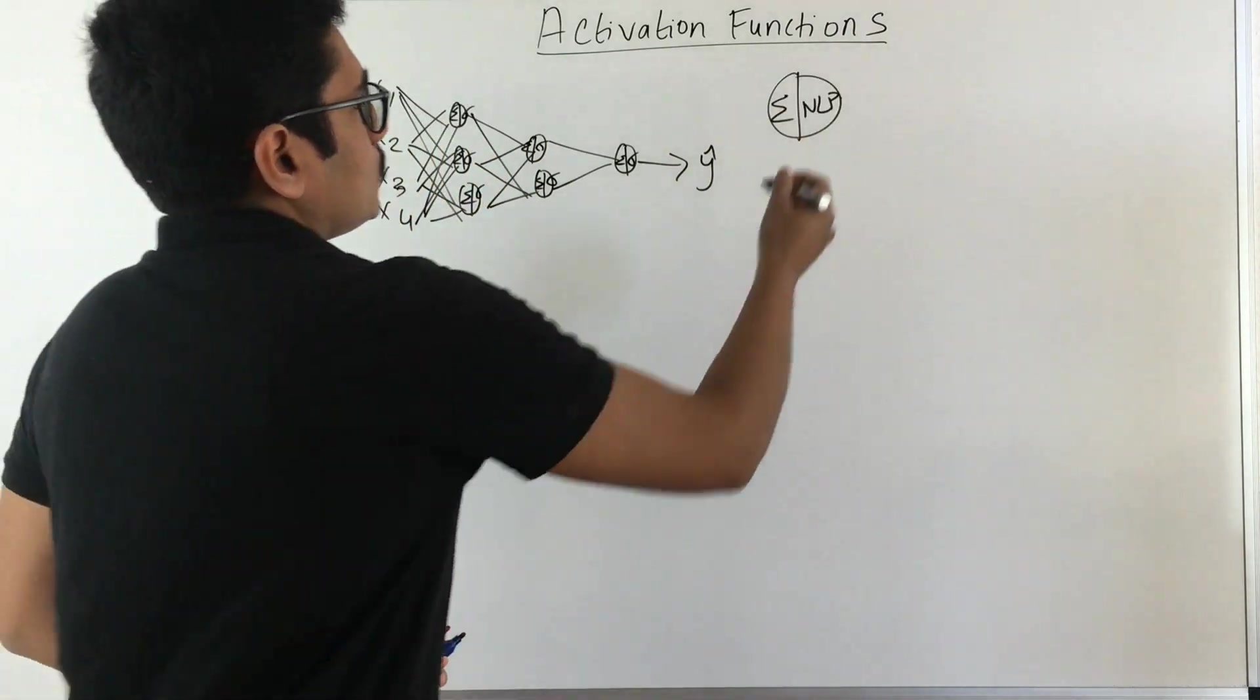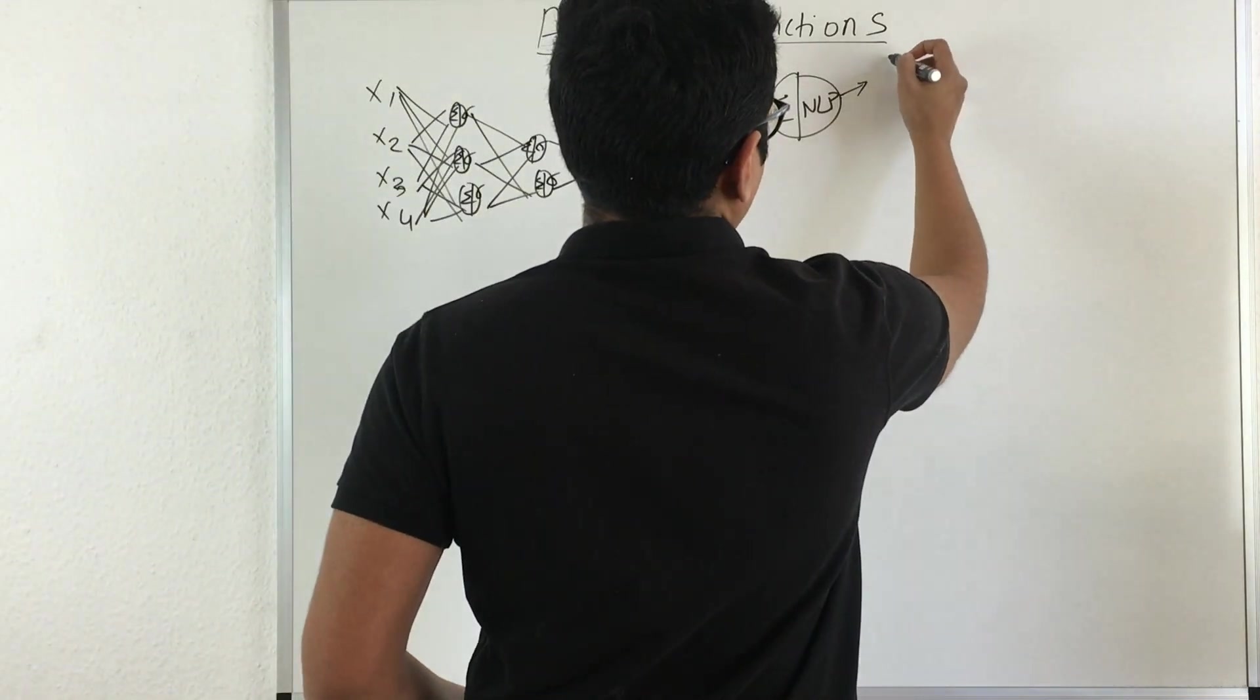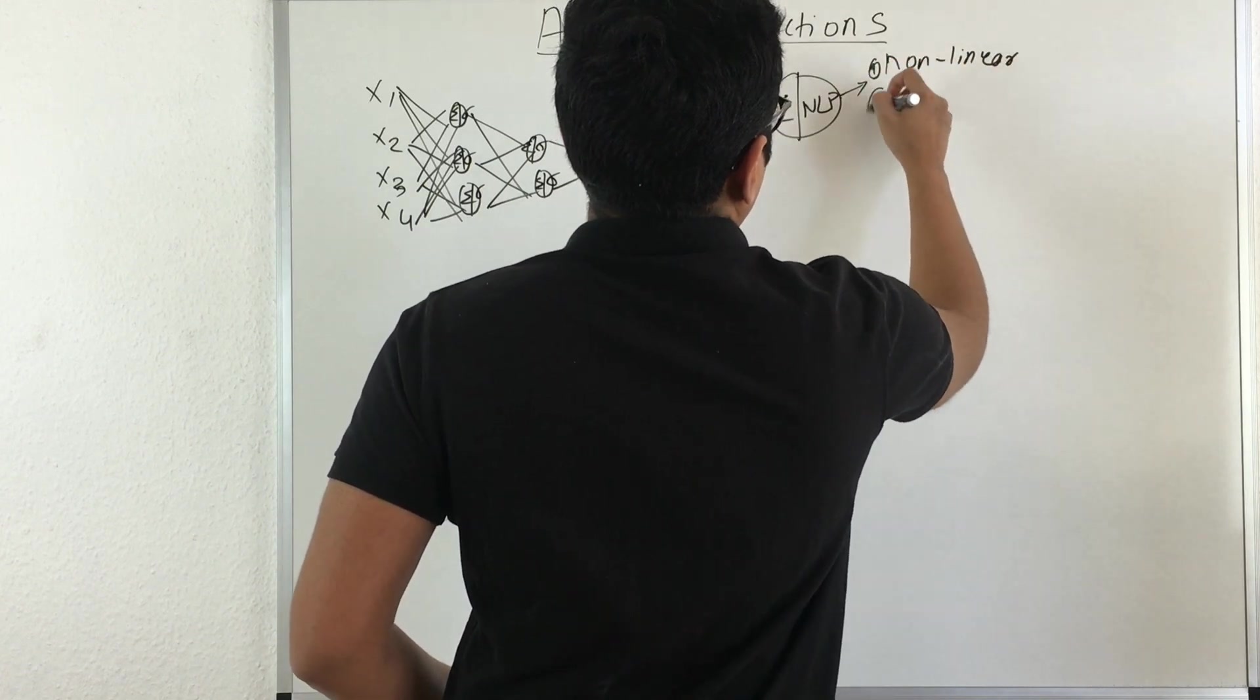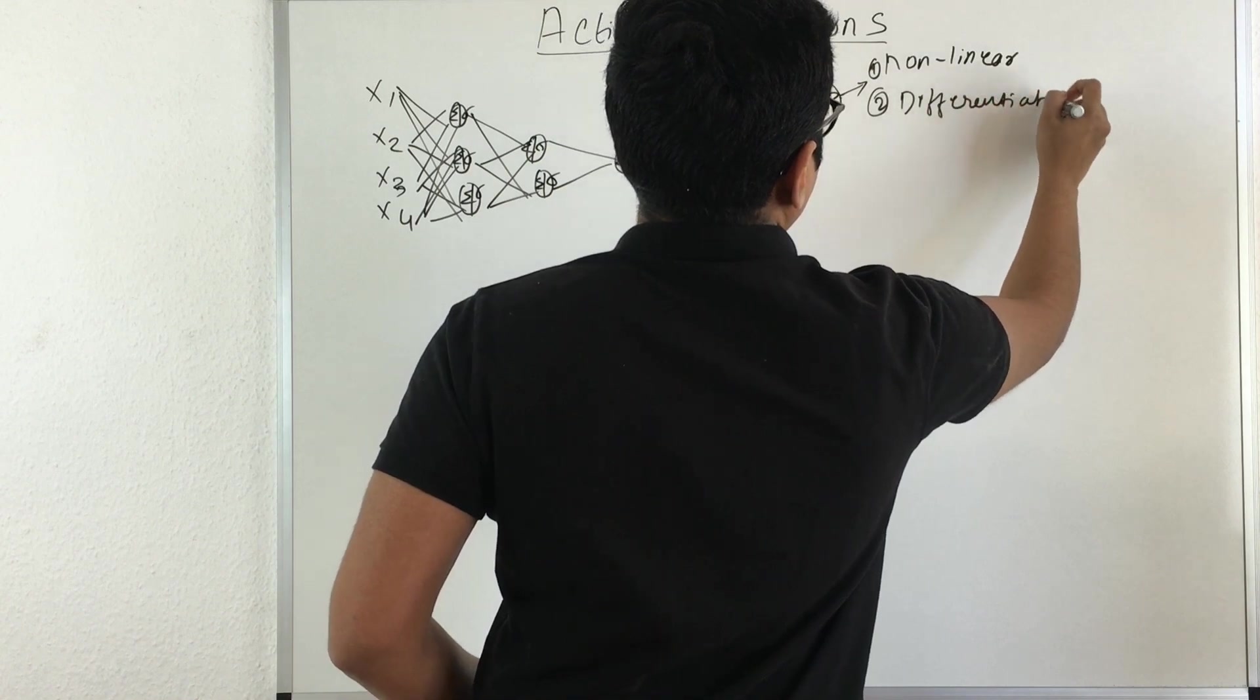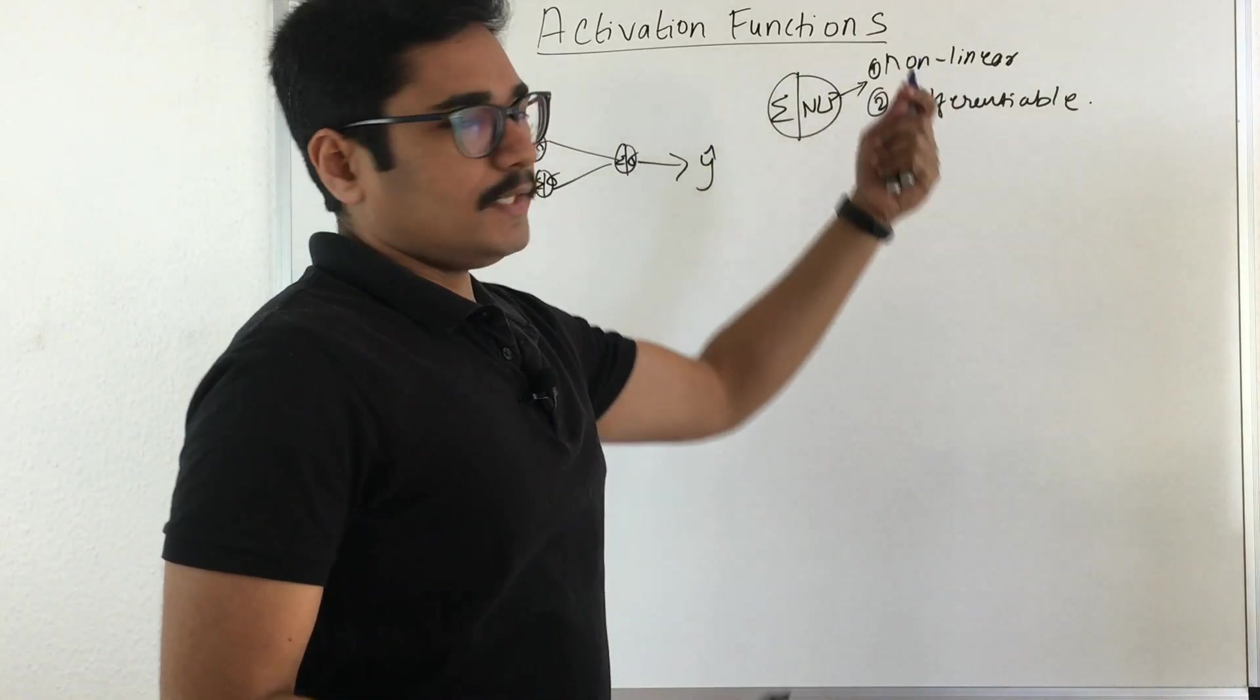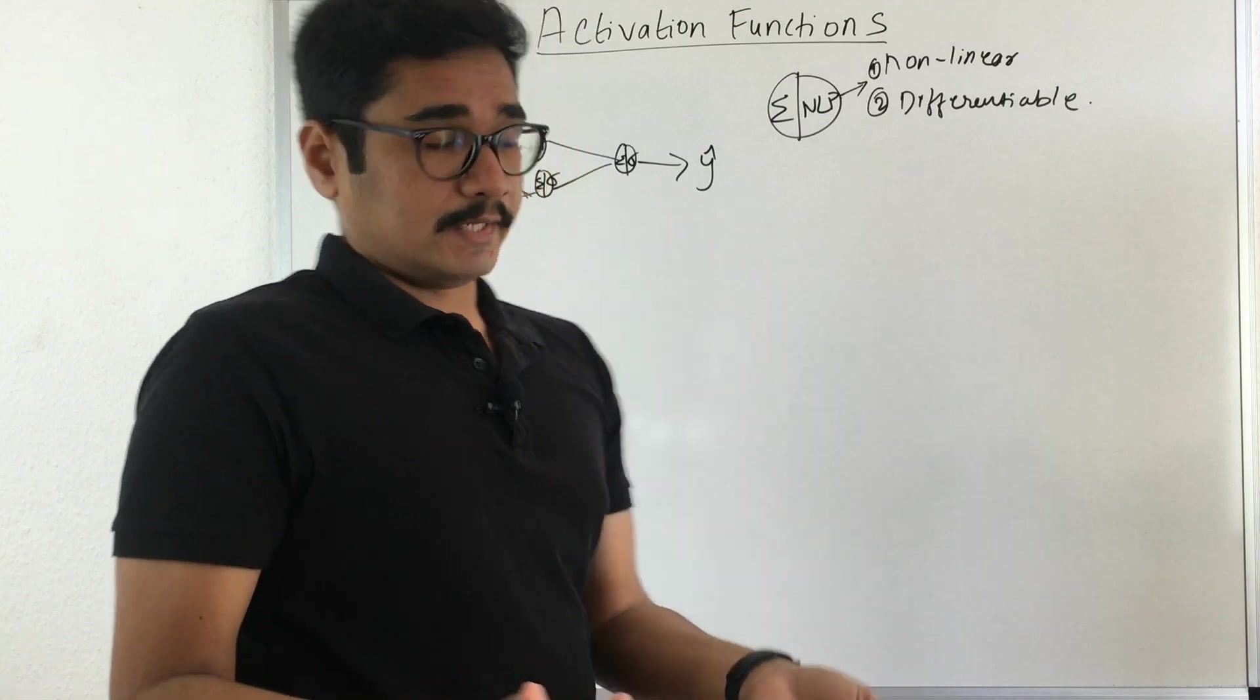Now this nonlinear part satisfies two different properties. The very first is it should be nonlinear, and second is that it should be differentiable. Now why does it have to satisfy nonlinearity?